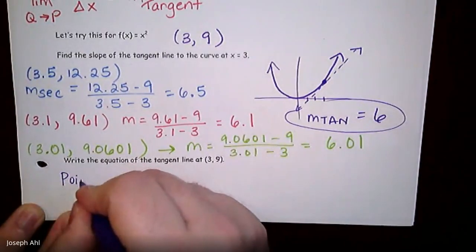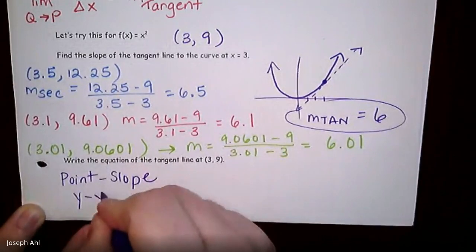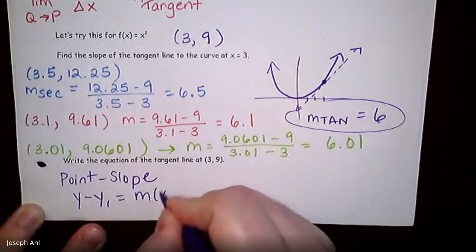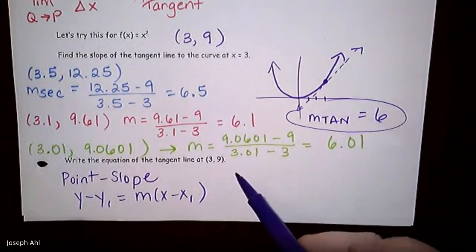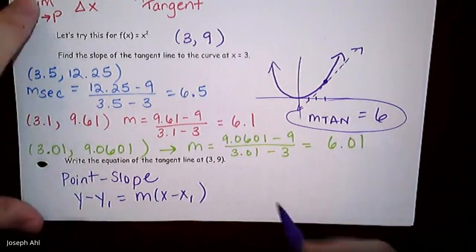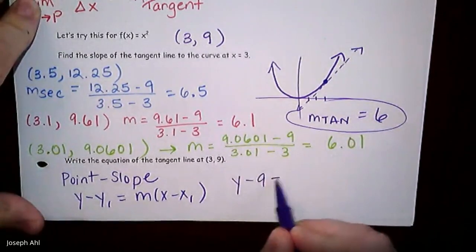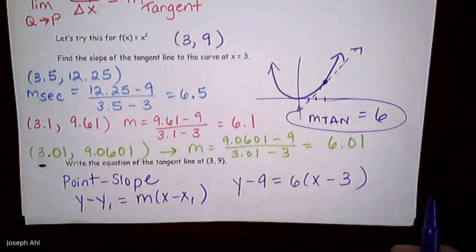So I'm going to, for every single example, use point slope form, which remember is y minus y1 equals m times x minus x1. Because in almost every example you will have a point and you will have a slope, so that makes the most sense to me. So it's going to be in this case y minus 9 equals the slope of 6 times x minus 3. Okay.